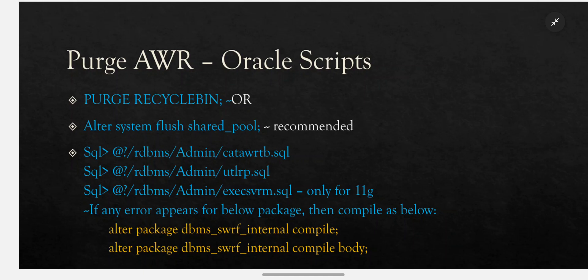Next, run the scripts: @$ORACLE_HOME/rdbms/admin/catawrtb.sql, then utlrp.sql, then execsvrm.sql — this last one is only for 11g. You must follow the sequence of these scripts. If any error appears for the last package execsvrm.sql, it will be for the dbms_swrf_internal package, so compile it manually: ALTER PACKAGE dbms_swrf_internal COMPILE; and ALTER PACKAGE dbms_swrf_internal COMPILE BODY;